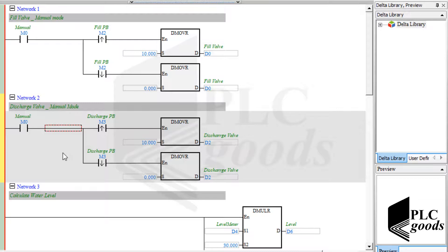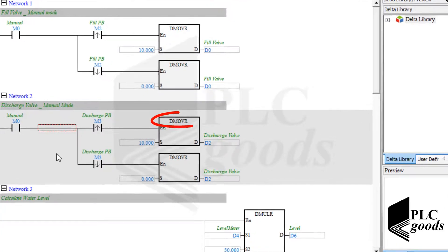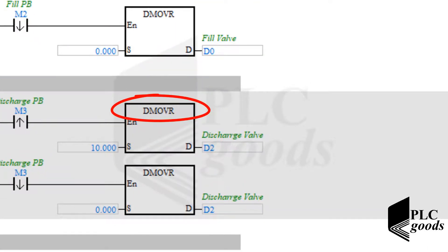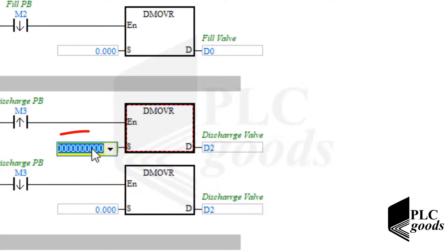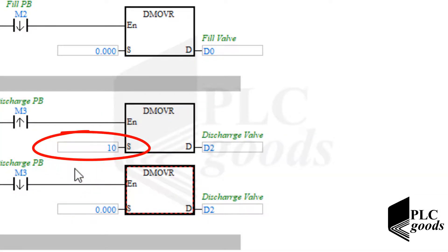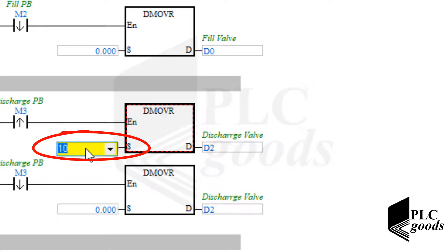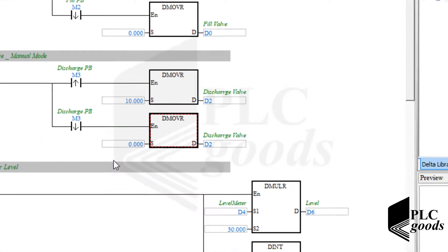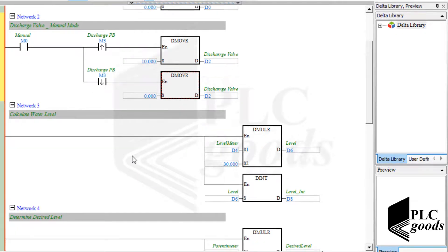Note that the data type used for valves inside Factory IO is real numbers, which use 32 bits. So I used the DMOVR move instruction. Note that if I enter a number without any fraction part, PLC will consider it as an integer number, but this instruction works with real numbers. So to solve this problem, the entered number must have a fraction part. The fraction part of an integer number like 10 is 0. The next network calculates the current level.